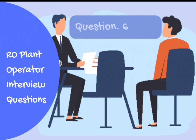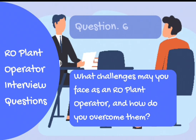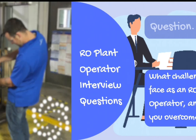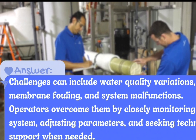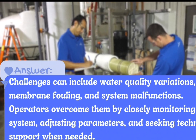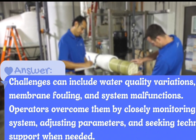Question 6: What challenges may you face as an RO plant operator, and how do you overcome them? Answer: Challenges can include water quality variations, membrane fouling, and system malfunctions. Operators overcome them by closely monitoring the system, adjusting parameters, and seeking technical support when needed.